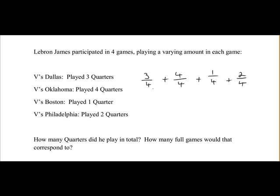So when adding fractions they must have the same denominator. Here they all have the denominator of 4, so we can just add them straight away. So 3 plus 4 is 7 plus 1 is 8 and 2 is 10. So that's equal to 10 over 4, 10 quarters.